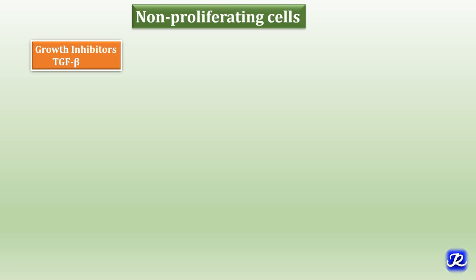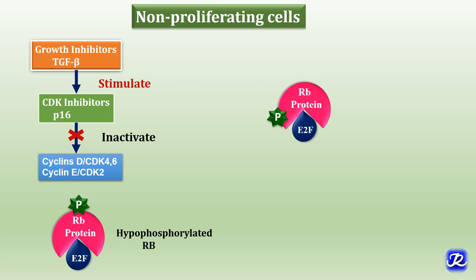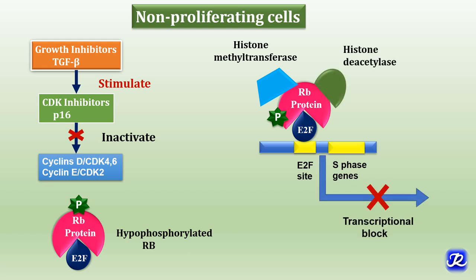In non-proliferating cells, there is synthesis of growth inhibitors like tumor growth factor beta, which stimulate CDK inhibitors like P16, which inactivate the cyclin-CDK complex synthesized during G1 phase. Because of this inactivation, the RB protein remains dephosphorylated or hypophosphorylated, and the E2F factor remains bound to RB protein. RB protein then binds to DNA and recruits chromatin remodeling proteins like histone methyltransferase and histone deacetylase, bringing about a transcriptional block and arresting the cell at the G1/S checkpoint.